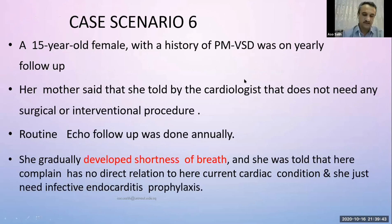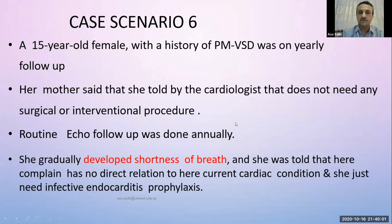Case six, the last scenario: a 15-year-old female with a history of perimembranous VSD on yearly follow-up, no surgery, no problems over the last 15 years. The cardiologist said she did not need intervention, only routine echo follow-up. She gradually developed shortness of breath but was told her complaint had no direct cardiac relation and she just needed infective endocarditis prophylaxis.